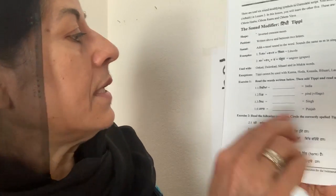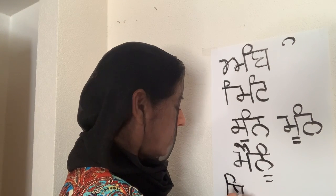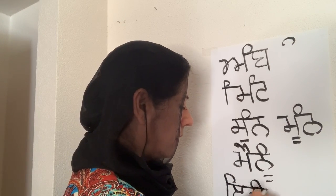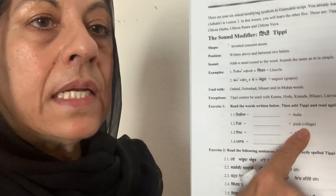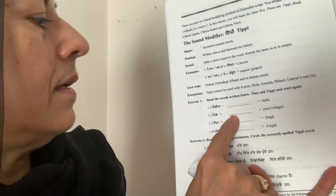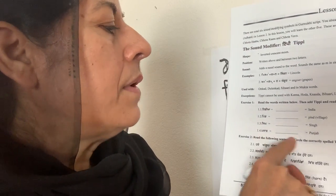Here are some words. For example, this is 'Idya' and we want to make it 'India' — you add a Tipi at the top. 'Pid' becomes 'Pinned.' Go ahead and write Pinned. 'Sig' becomes 'Sing,' 'Punjab,' and 'Punjab.' That's how you write the Tipi in the middle of the word.